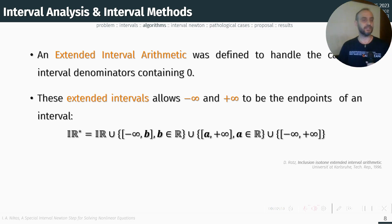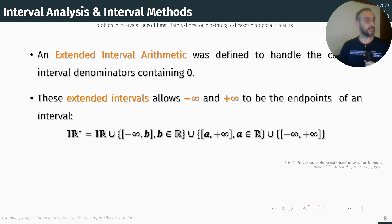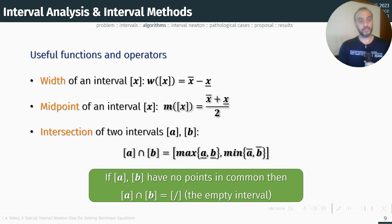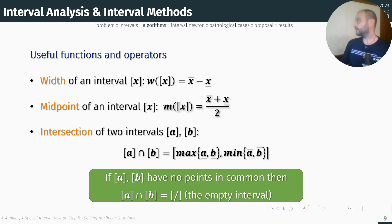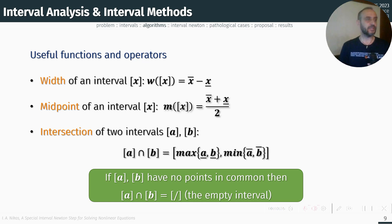We now have the IR* set, which is the real intervals plus the semi-finite intervals and the real line. We have also defined some useful functions and operators. The width of an interval is a simple idea, as is the midpoint and the intersection of two intervals. The only thing to mention is that if two intervals A and B have no points in common, then the result is an empty interval.